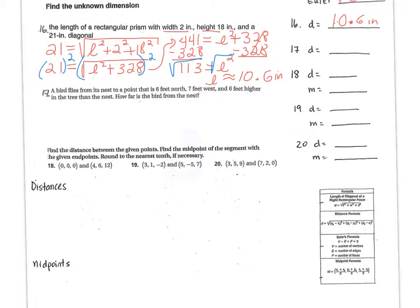Now for number 17, it says a bird flies from its nest to a point that is 6 feet north, 3 feet west, and 6 feet higher in the tree than the nest. How far is the bird from the nest? So we have to kind of come up with a drawing. And when you do the drawing, at the end, you're going to come up with the way the bird is coming and going. It's a diagonal.